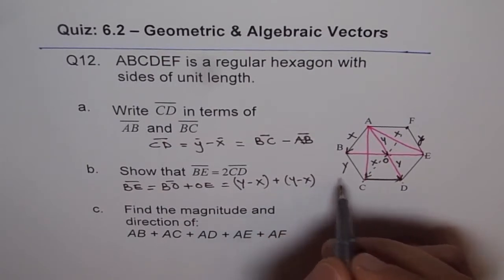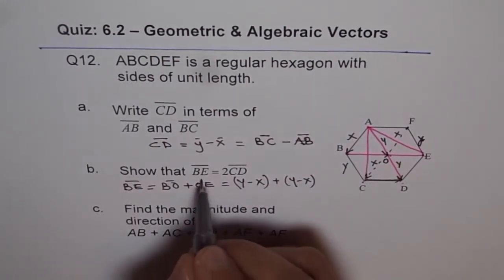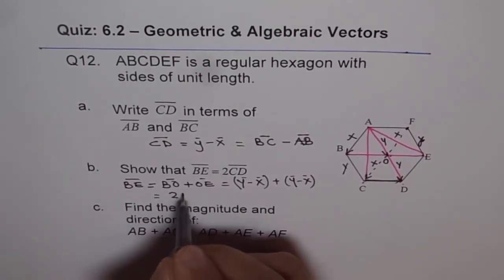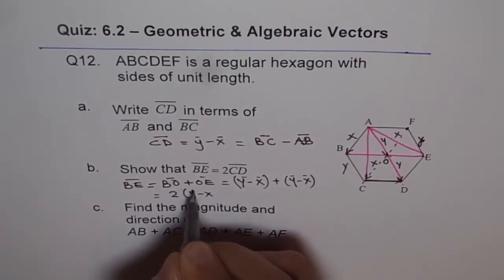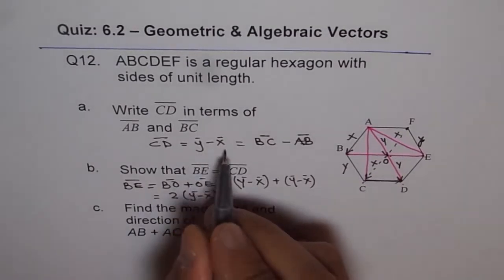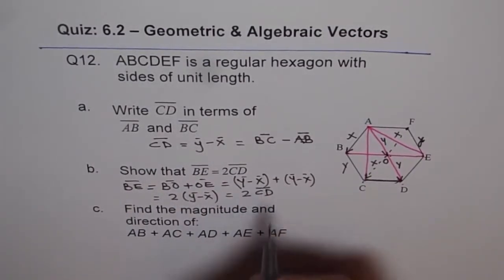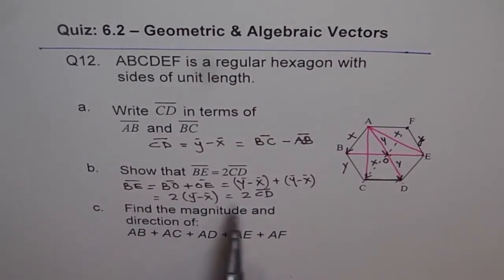OE is also Y minus X. So that means BE is equal to 2 times Y minus X. And Y minus X is CD. So we can write 2 times CD. So we have proved BE is 2 times CD.